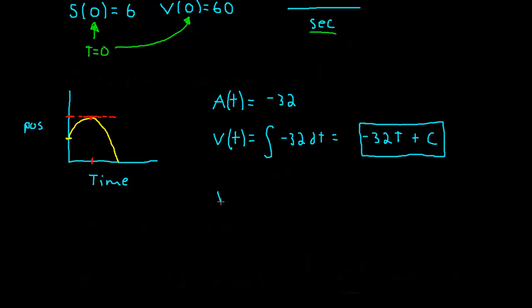In other words, V(0) equals negative 32 times 0 plus C. Well, we can see that this is just 0, and V(0) is 60. So, it looks like from our initial condition, we found that our C value is 60.